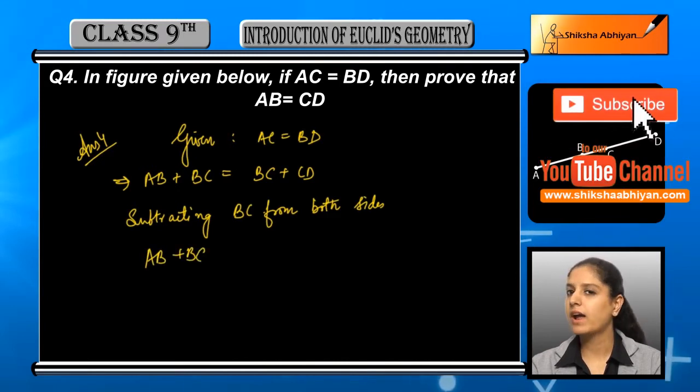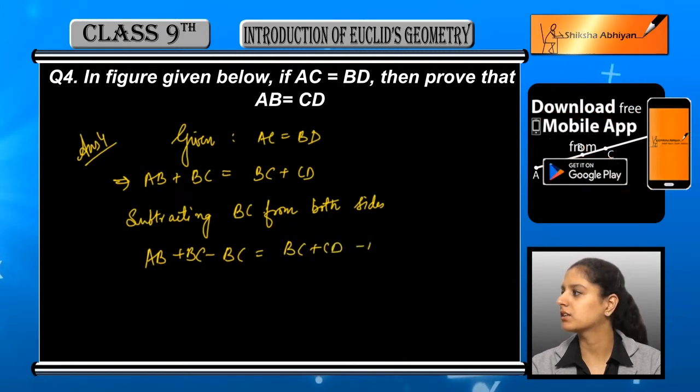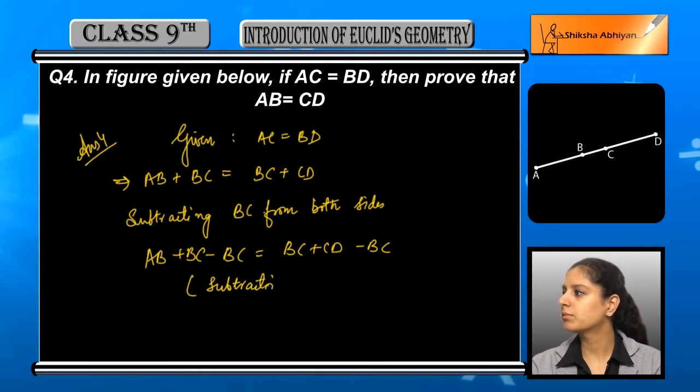And same on the other side: BC plus CD minus BC. Now, if we have two sides of an equation, we will add or subtract the same value from both sides.